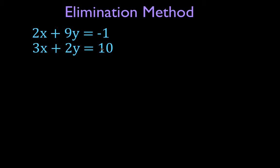We want to know where those lines cross each other, and what x and y values will solve this equation, and what single x and y values will also be a solution for this equation. We're going to do that using the elimination method. What we need to do is add these two equations up, and when we do, we need to eliminate either the x values or the y values.